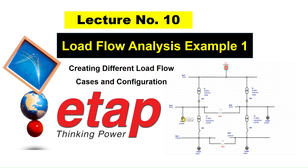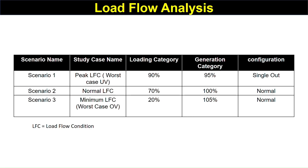In today's lecture, we will create load flow case studies. The first scenario is Peak LFC, where the loading category is maximum at 90% — that is the peak load — and the generation category is 95%, that is minimum generation. The configuration is synchronized.